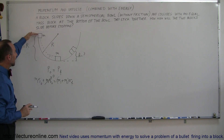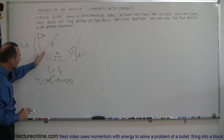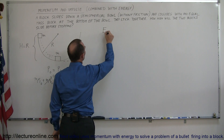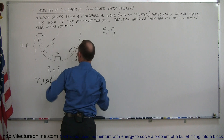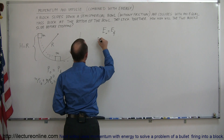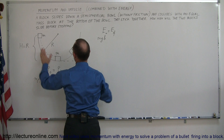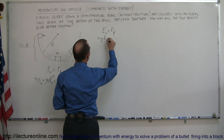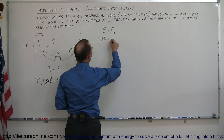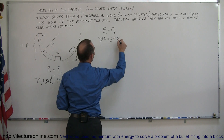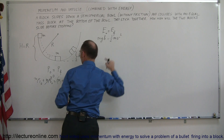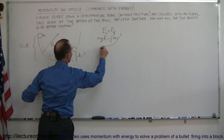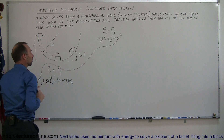The block gained kinetic energy by sliding down the bowl. Using the conservation of energy, we can say energy initial equals energy final. The energy initial would be mgh — potential energy from being at height h above the ground — and when it hits the second block, it would be all kinetic energy: one-half mv squared. So this v squared becomes the initial velocity at the moment of collision.